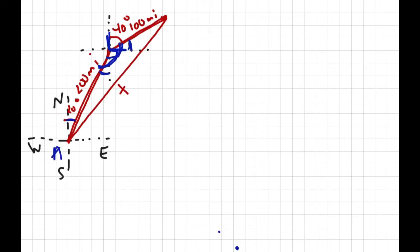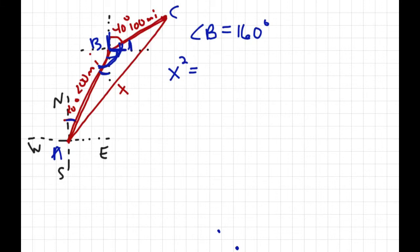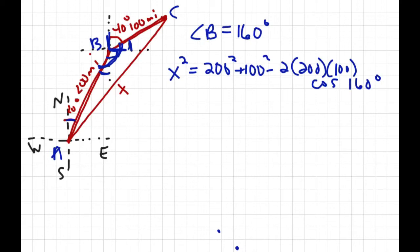Calling the vertices A, B, and C with angle B equal to 160 degrees, we use the law of cosines: x squared equals 200 squared plus 100 squared minus 2 times 200 times 100 times cosine of 160 degrees. Don't forget to take the square root at the end. The distance is approximately 295.95 miles.